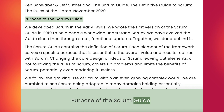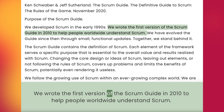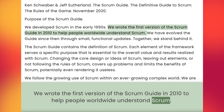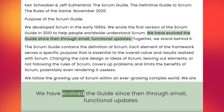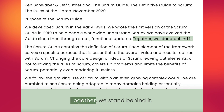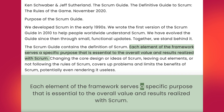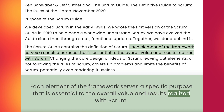Purpose of the Scrum Guide. We developed Scrum in the early 1990s. We wrote the first version of the Scrum Guide in 2010 to help people worldwide understand Scrum. We have evolved the guide since then through small, functional updates. Together, we stand behind it. The Scrum Guide contains the definition of Scrum. Each element of the framework serves a specific purpose that is essential to the overall value and results realized with Scrum.